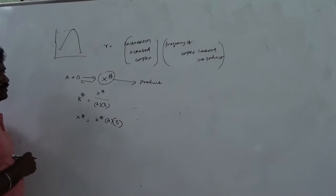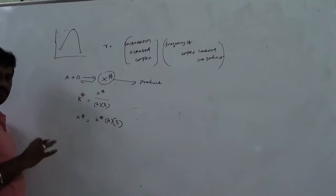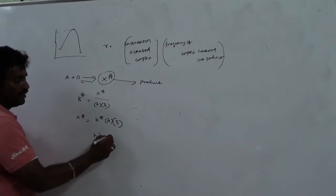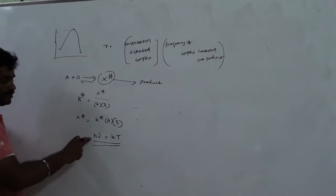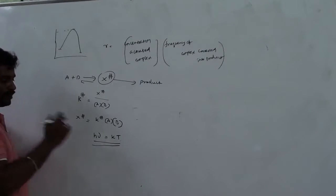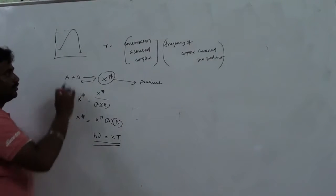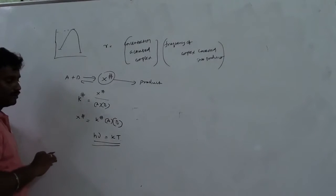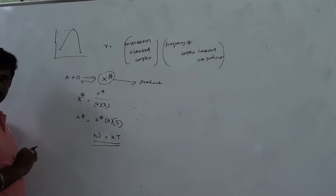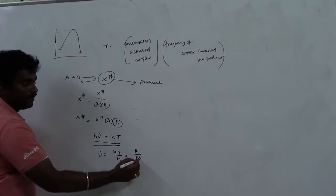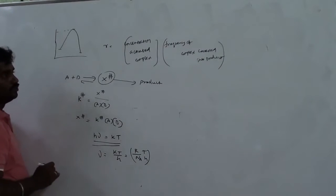The frequency at which the complex converts into product: whenever the activated complex has weak bonds within the transition state, new bonds form and old bonds break. The vibrational energy converts into translational energy. We equate hν with kT — h times nu (vibration, bond break) equals kT (Boltzmann constant times temperature). So ν equals kT/h, where k equals R/Nₐ.